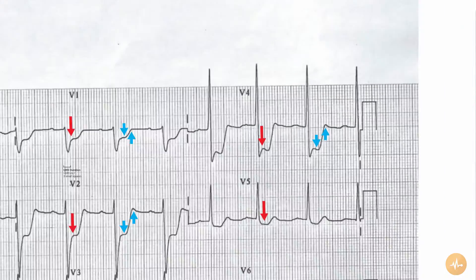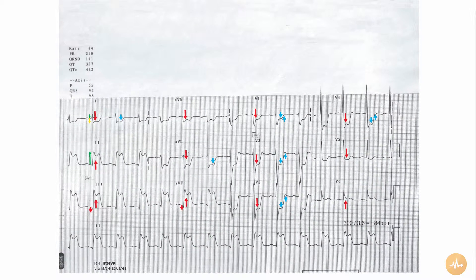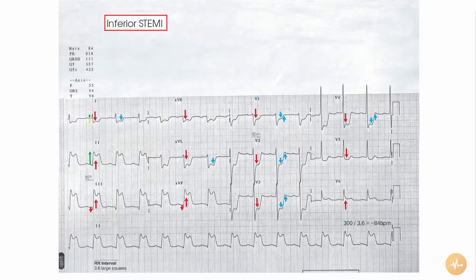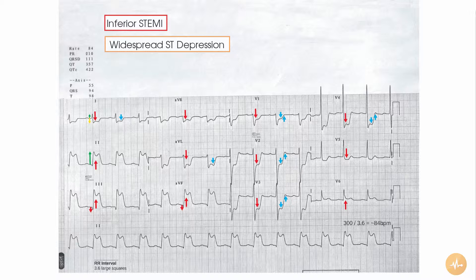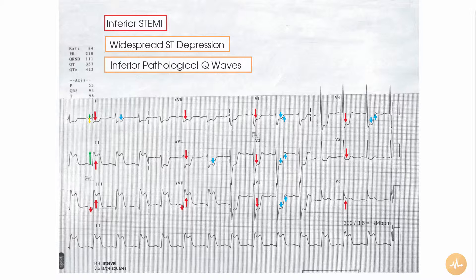In summary, the ECG recorded from a patient with chest pain reveals ST segment elevation in the inferior leads and widespread ST segment depression elsewhere. There is also formation of pathological Q waves in the inferior leads. The deep horizontal depression of the ST segments in the anterior leads may well represent posterior extension of the myocardial infarction.